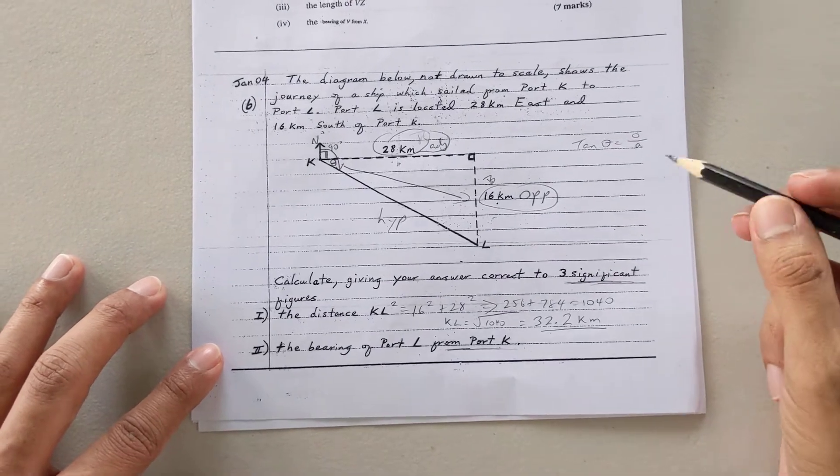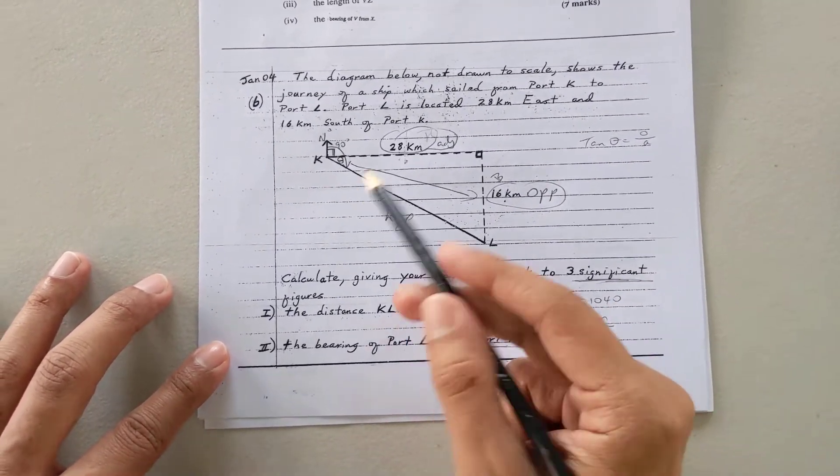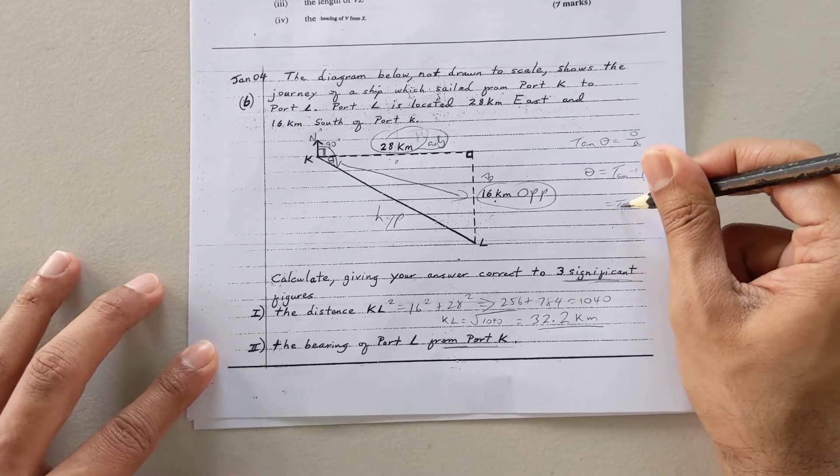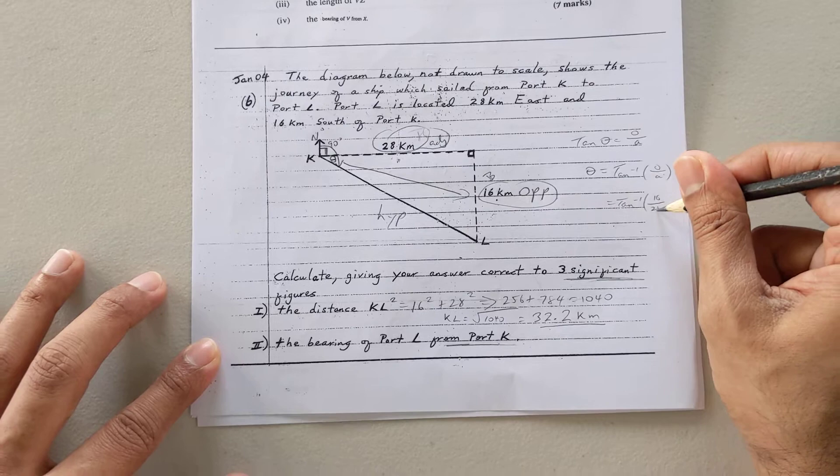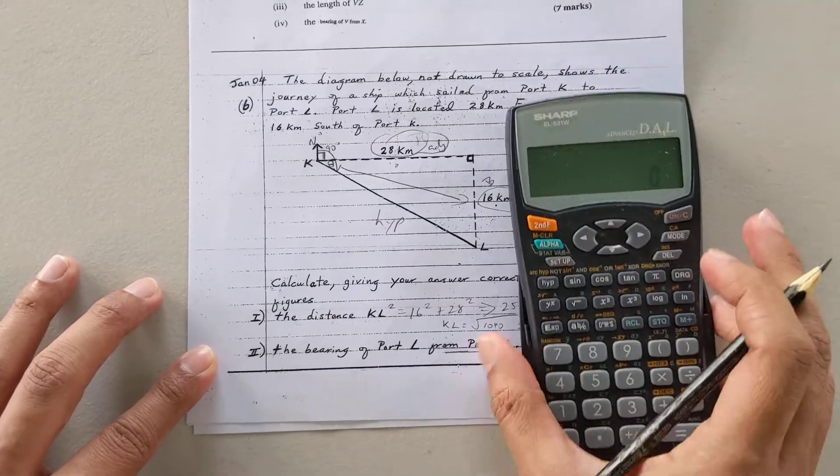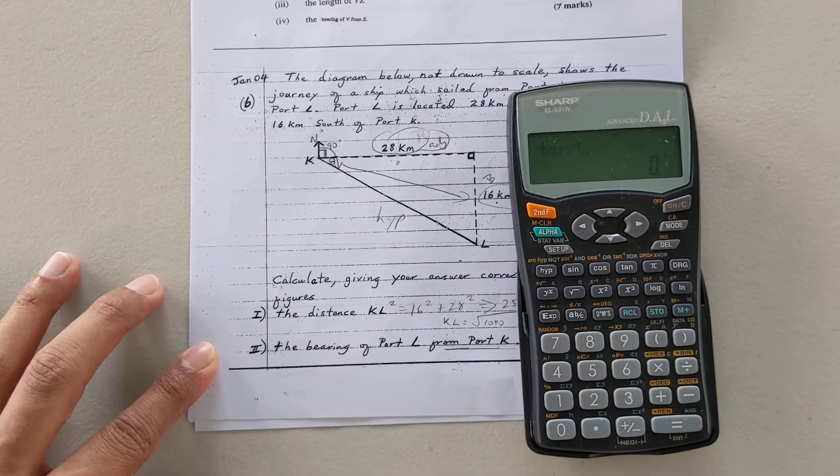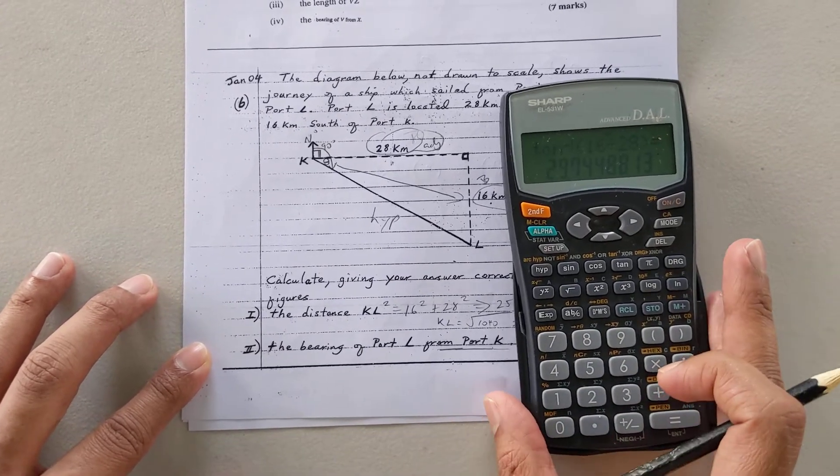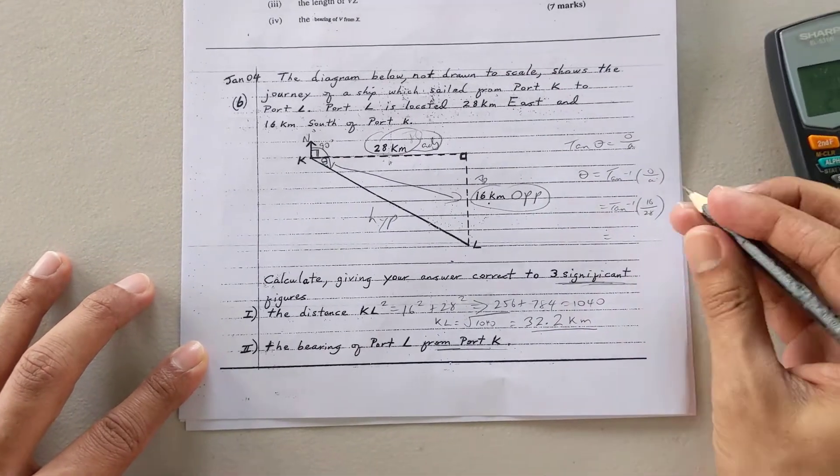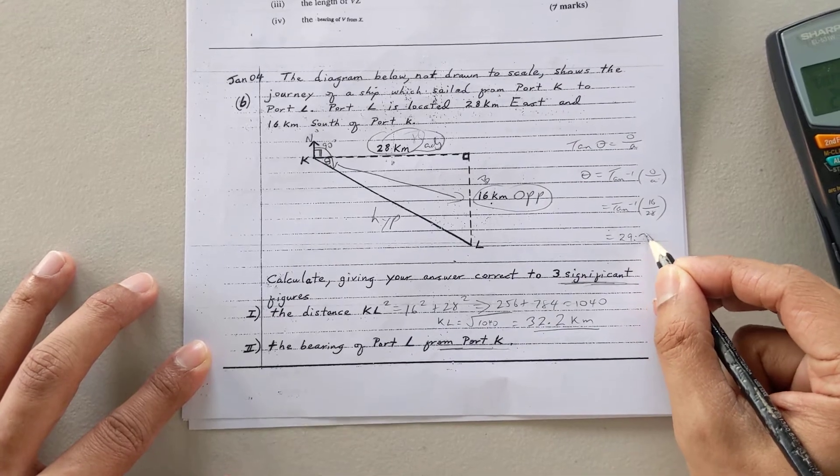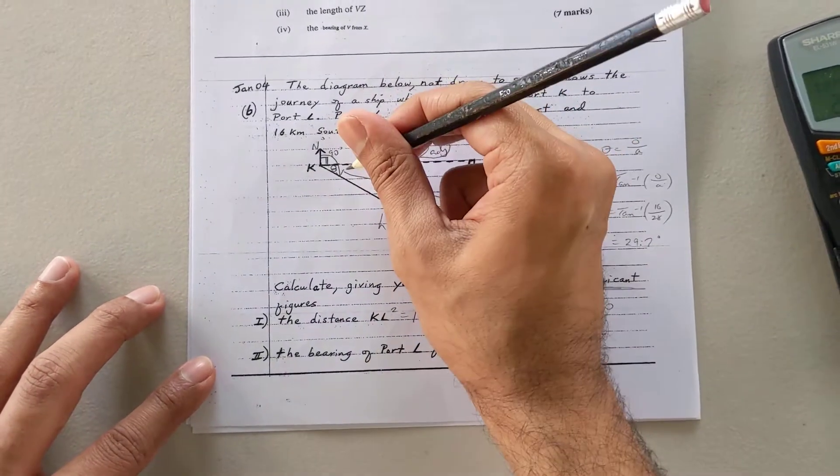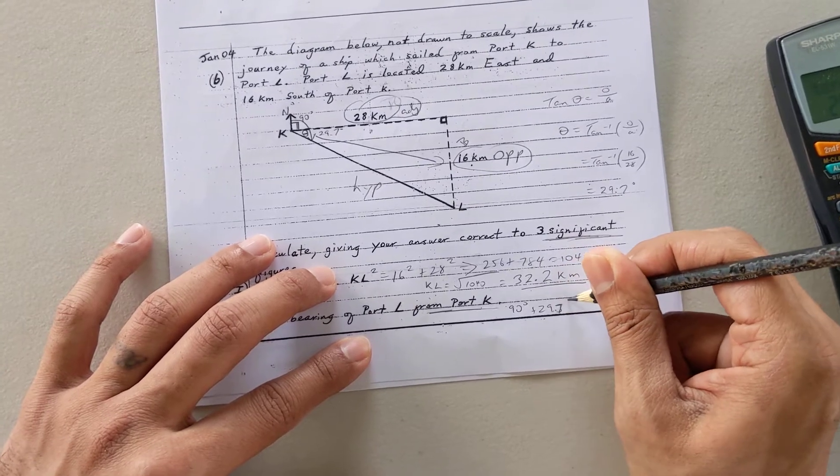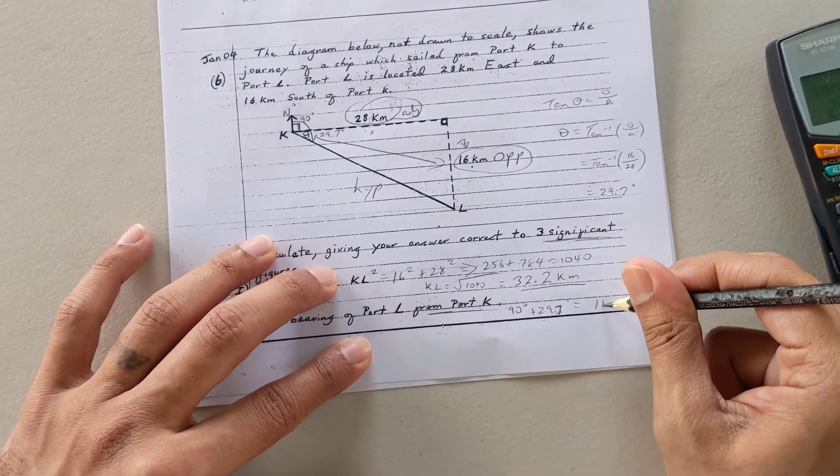It will be tan theta is opposite over adjacent. Just like before, though, this is not a length we're trying to find. They wanted an angle. And once you have to find an angle, it's always the inverse you would need. So it'll be tan inverse. And I'm just sticking with values. Opposite is 16, adjacent is 28. I want to stick that in my calculator. Second function, tan inverse. Let's open my bracket, 16 divided by 28, close my bracket, 29.74 degrees. But since we're already rounding off stuff, we'll put it as 29.7 for now. So remember I said the bearing was both of those. So to get the bearing, it'll be 90 degrees plus 29.7, which is roughly 30. So I'm going to get 119.7 degrees.